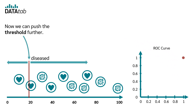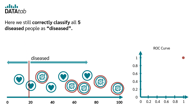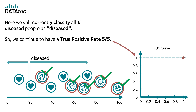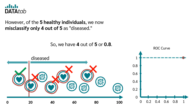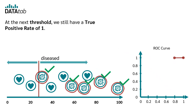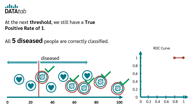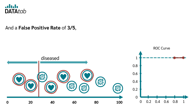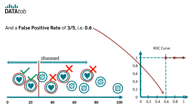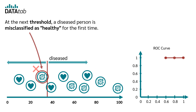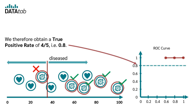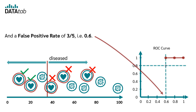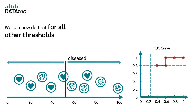Now we can push the threshold further. Here we still correctly classify all 5 diseased people, so we continue to have a true positive rate of 5 out of 5. However, of the 5 healthy individuals, we now misclassify only 4 out of 5 as diseased, so we have 0.8. At the next threshold, we still have a true positive rate of 1 — all 5 diseased people are correctly classified — and a false positive rate of 3 out of 5, i.e. 0.6. At the next threshold, a diseased person is misclassified as healthy for the first time. We therefore obtain a true positive rate of 4 out of 5, i.e. 0.8, and a false positive rate of 3 out of 5, i.e. 0.6. We can now do that for all other thresholds.